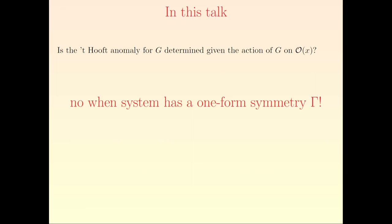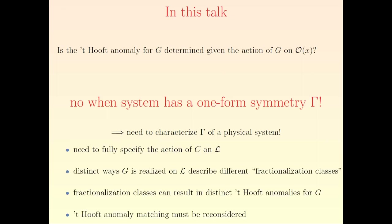In general, you have to understand the higher-form symmetry and whether your system has or doesn't have a one-form symmetry. Physically, what we need to do is to fully specify not only the action on the local operators, but the action of G on the line operators. In general, there can be distinct ways to realize the action on line operators once we fix the action on local operators. In condensed matter, coming from the fractional quantum Hall effect, these are called fractionalization classes. Different choices of how G acts on line operators can give rise to distinct 't Hooft anomalies for the zero-form symmetry.